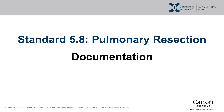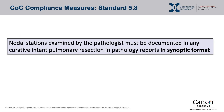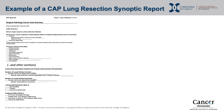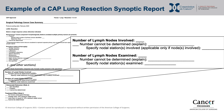The next key element is standard-compliant documentation. Nodal stations examined by the pathologist must be documented in any curative intent pulmonary resection pathology report in a synoptic format. Nodal stations must be named and/or numbered and documented in the pathology report. This is an example of a CAP synoptic report from a lung resection. The number of nodes involved must be documented, the pathologist must specify which nodal stations are involved, and the CAP synopsis must specify which lymph node stations were examined — at least three mediastinal and at least one hilar station.